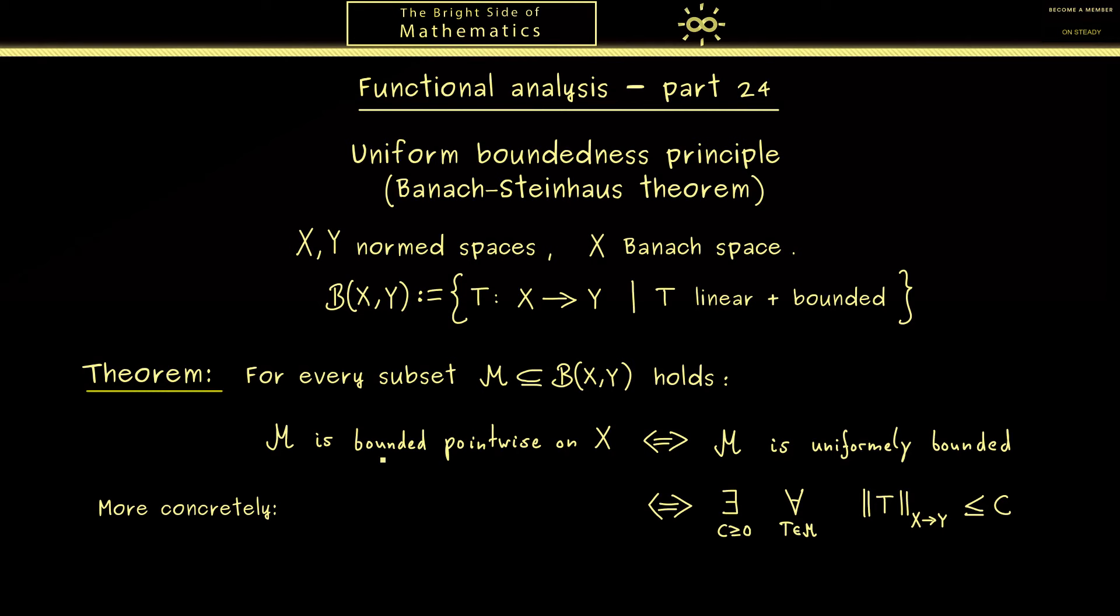Now going to the other notion, bounded pointwise on X means something different because here we don't look at the operator norm. However we look at the norm of the images which means we have the norm in Y and put in here an arbitrary x. Of course this looks similar but beware you can choose the C here depending on x. Exactly this makes this bounded property pointwise because you first choose the x and then the constant.